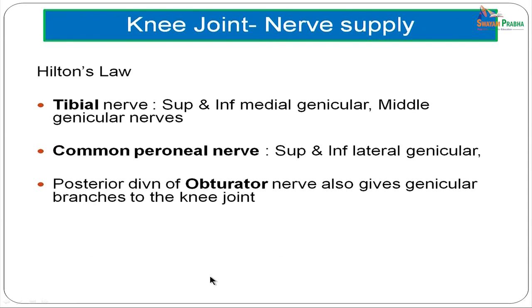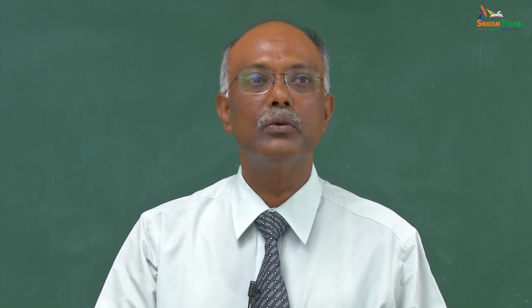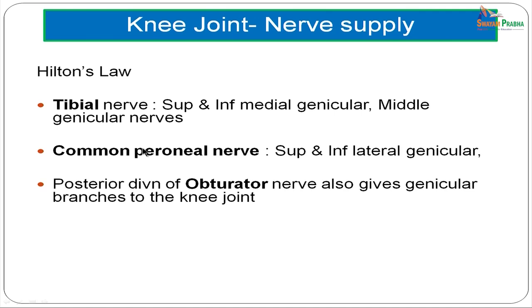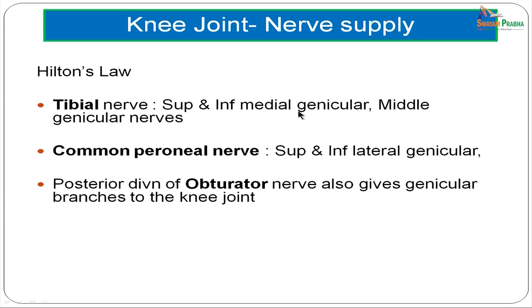For nerve supply, Hilton's law states that any nerve crossing a joint gives a branch to the joint and one to the overlying skin. The nerves crossing the knee joint include the tibial nerve, which gives three articular branches (superior and inferior medial genicular and middle genicular nerve), the common peroneal nerve, which gives the superior and inferior lateral genicular nerves, and the posterior division of the obturator nerve, which also gives a genicular branch.